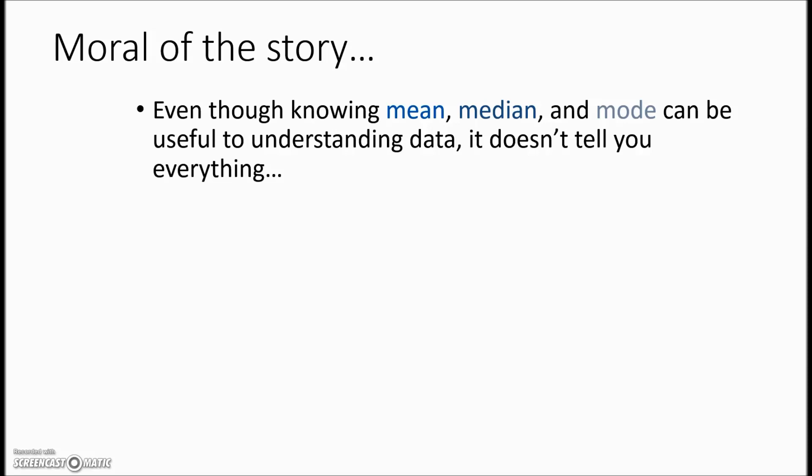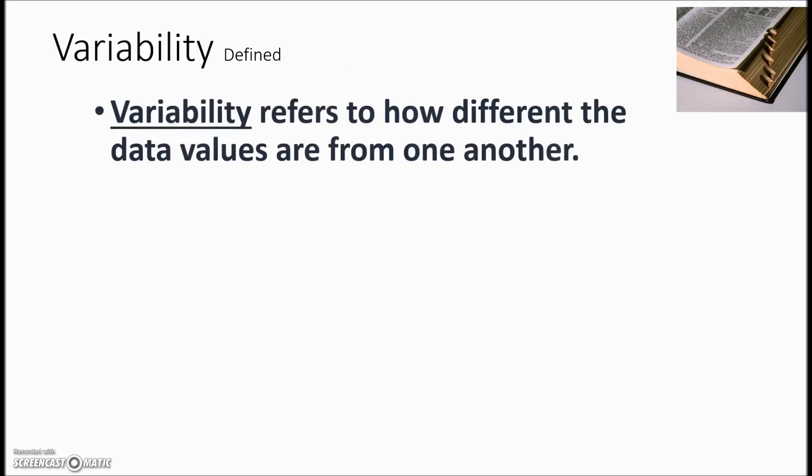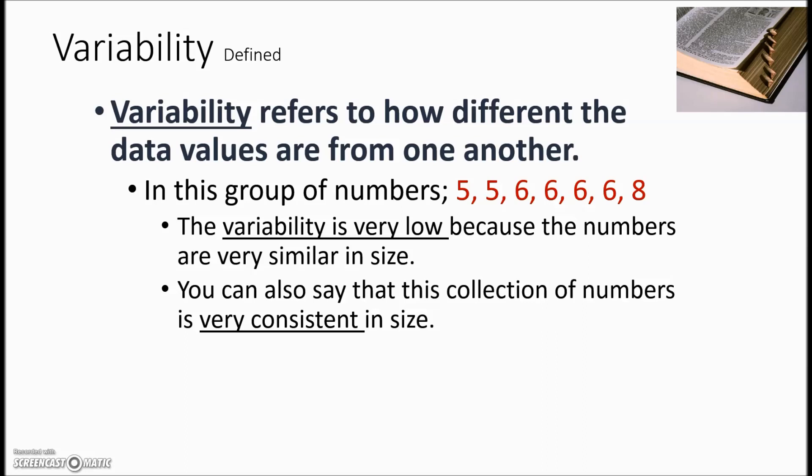So it's important that we know something about the variability. Even though we know mean, median, and mode we need to take a look at variability which refers to how different the data values are from one another. In this example the numbers are rather similar so we would say the variability is very low. We also would say that the numbers are very consistent.